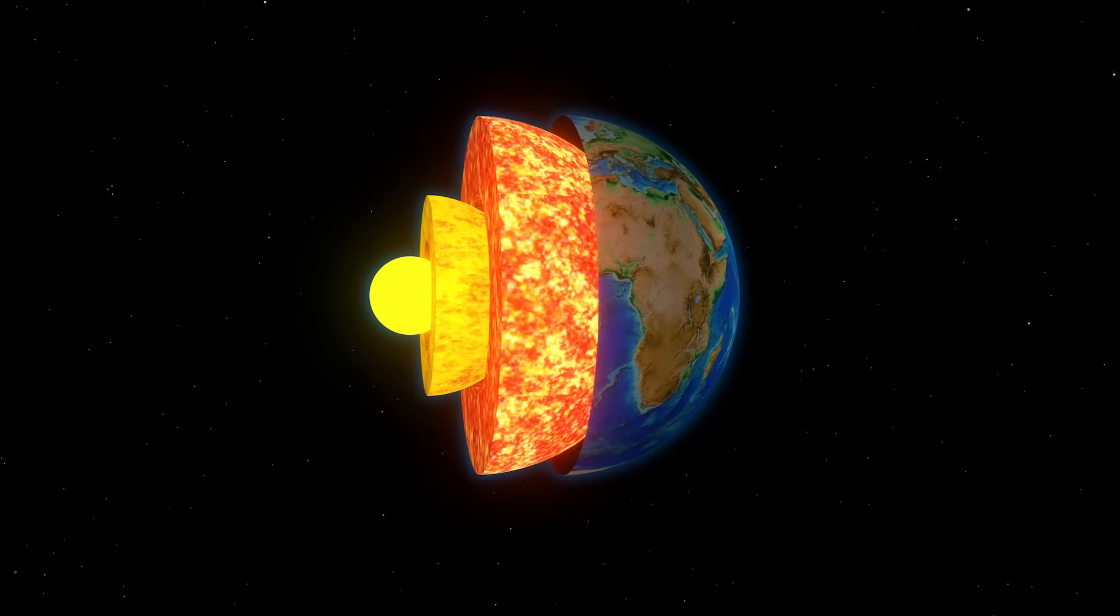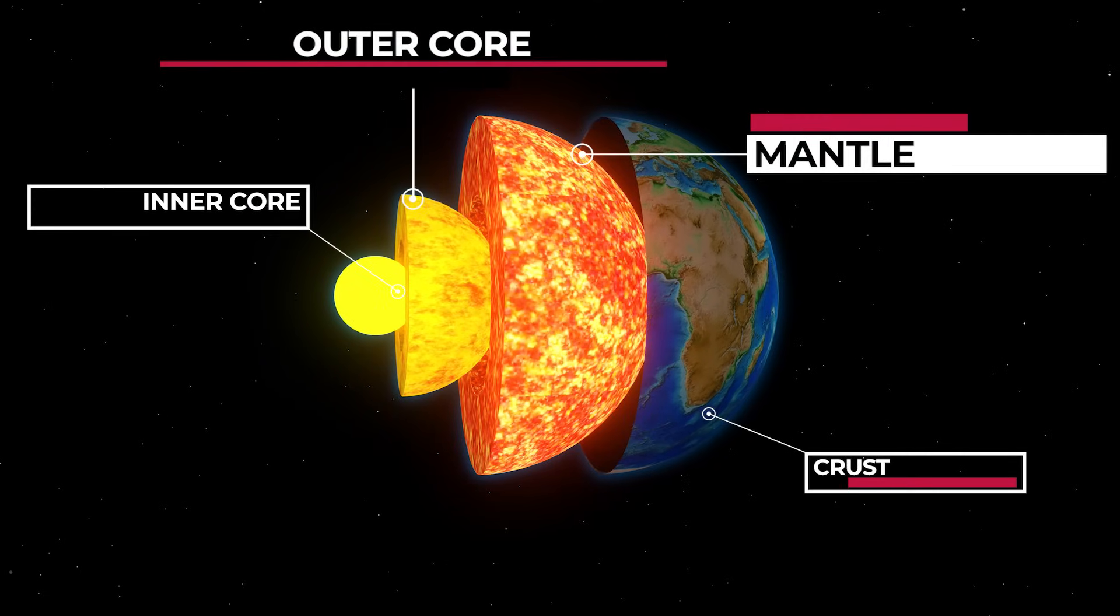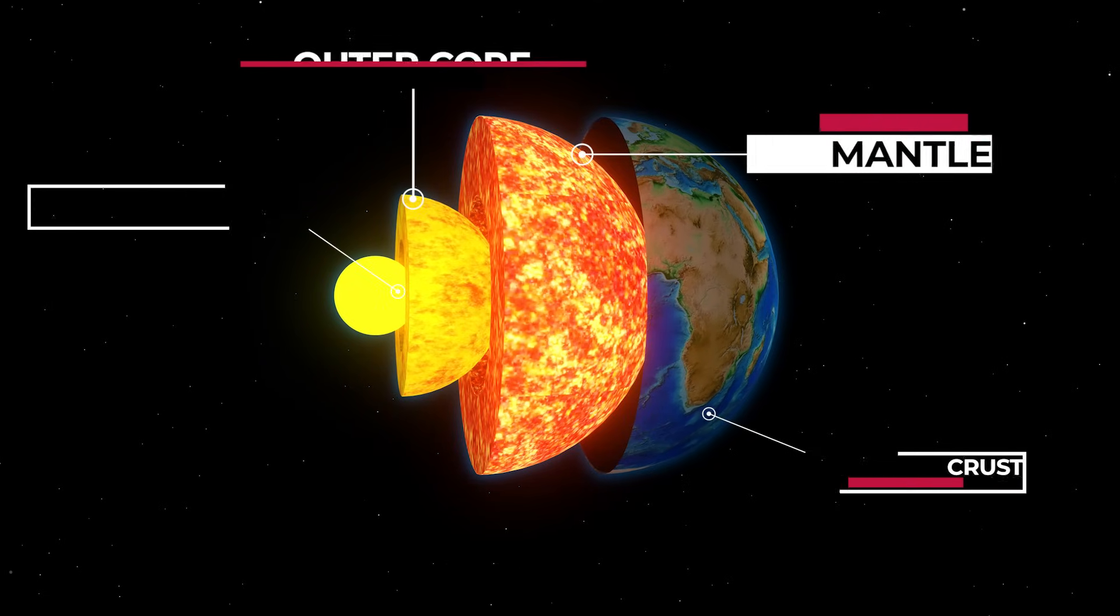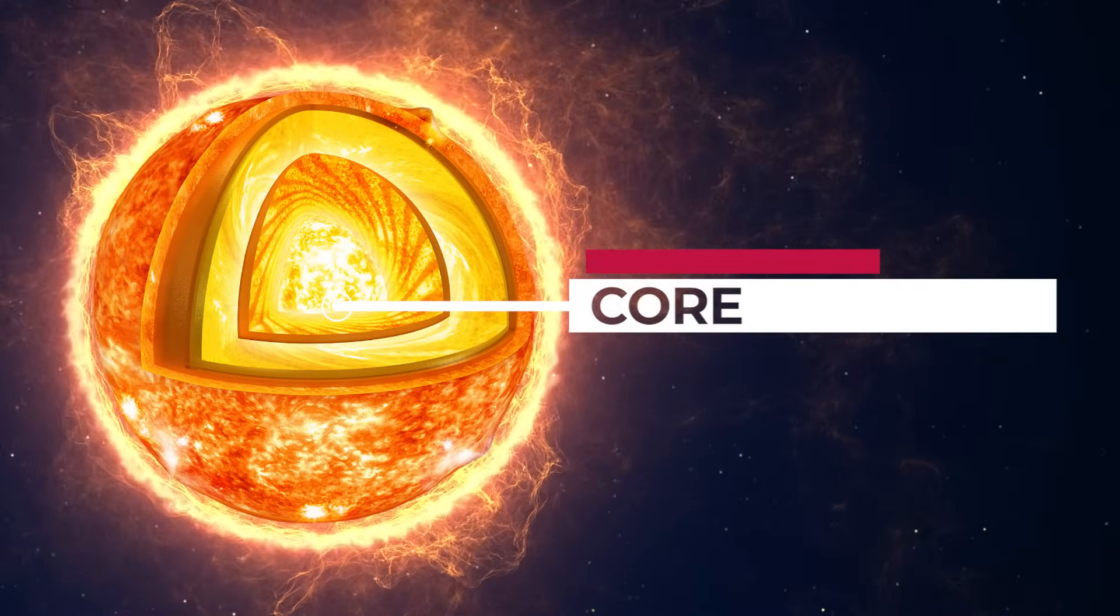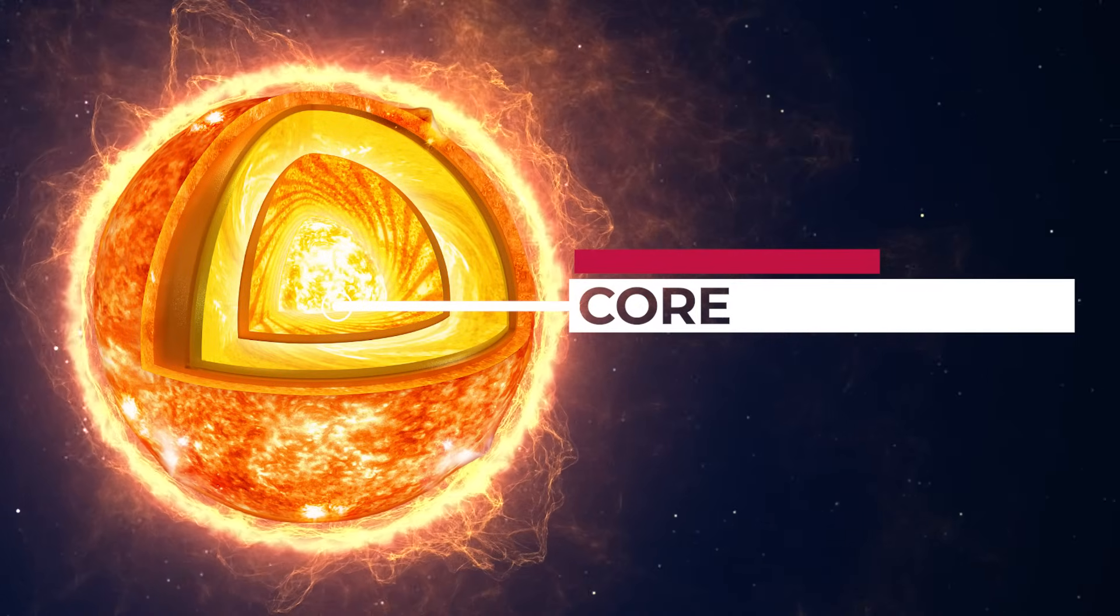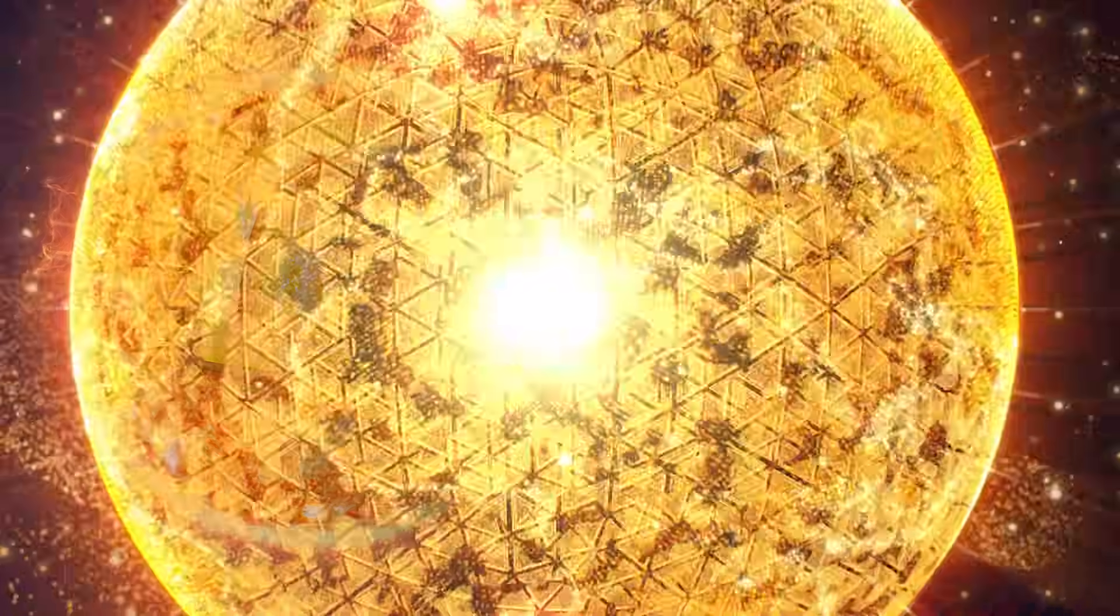Just like the earth has layers such as core, outer core, mantle and crust, the sun also has layers. The innermost layer is called as the core. And in the core, hydrogen atoms collide constantly.